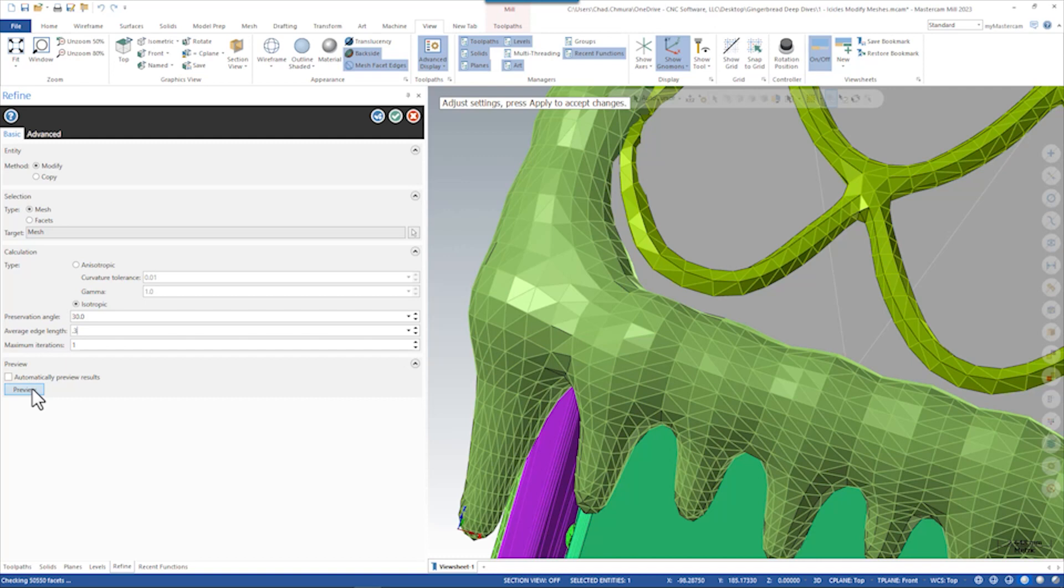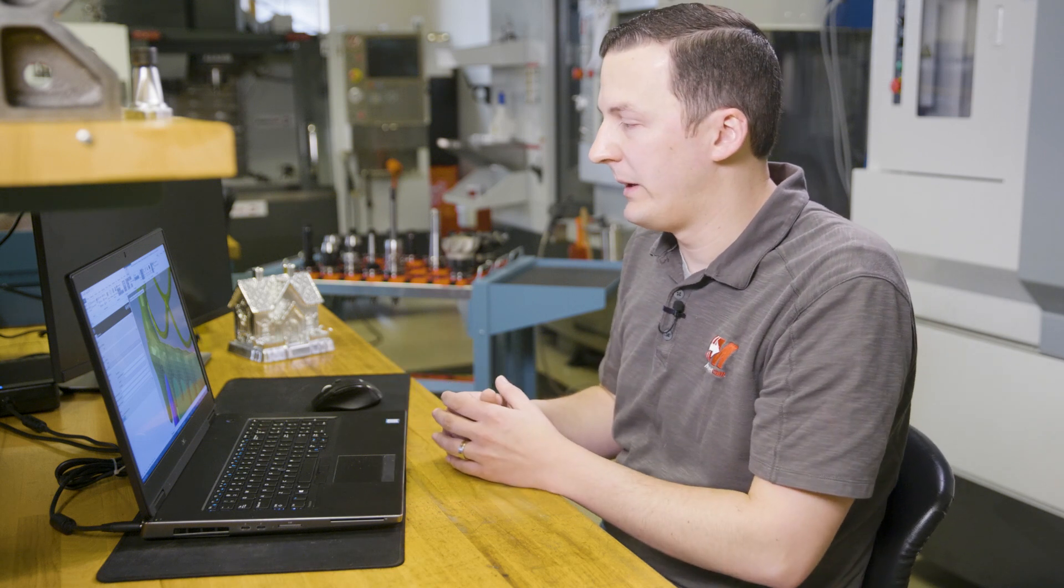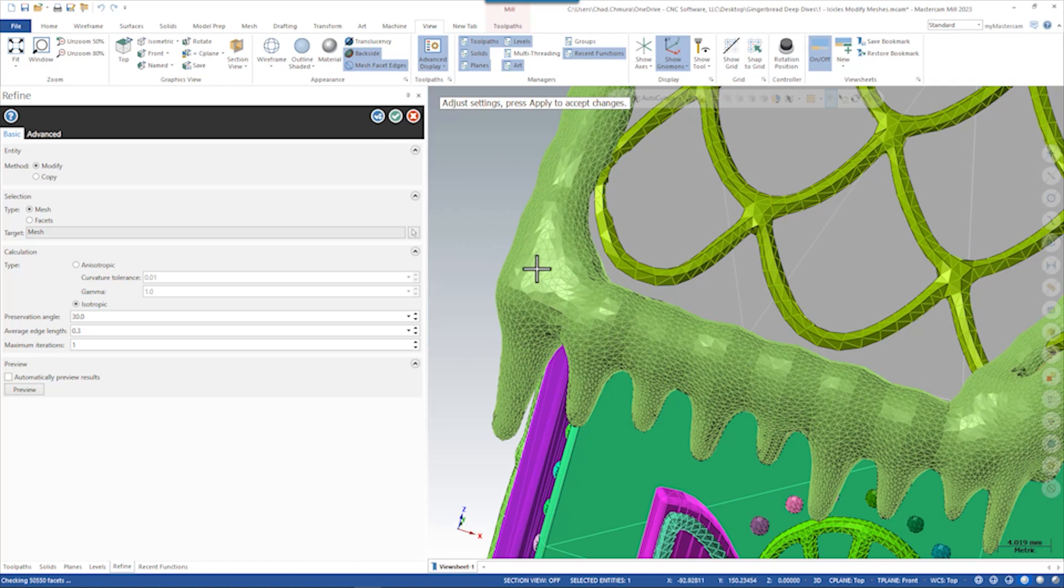What this is doing is it's going to keep the same geometry but make it with more triangles, meaning we have more triangles to work with later on. It already looks a little bit more smooth based on adding all those triangles, but we can accept this now and move into the smoothing side.